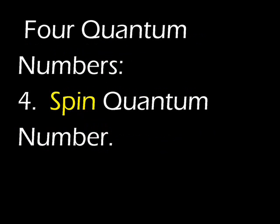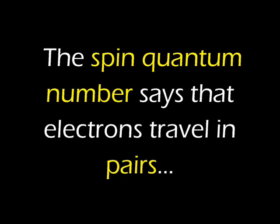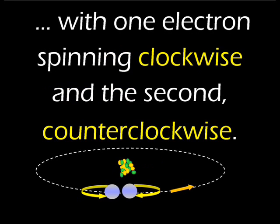The fourth quantum number is known as the spin quantum number. It tells us the direction the electrons are rotating as they travel around the nucleus of an atom — that's where the name 'spin quantum number' comes from. Not only are the electrons traveling in an orbit around the nucleus, they're also spinning, much like the Earth rotates on its axis as it revolves around the Sun. The direction of spin can either be clockwise or counterclockwise.